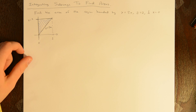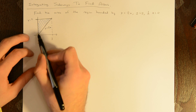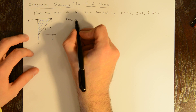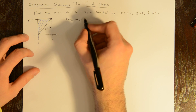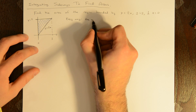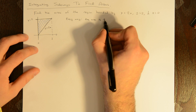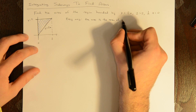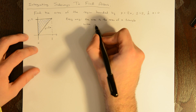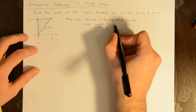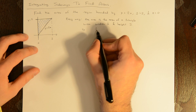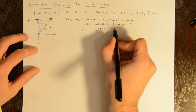The easiest way is just to say this triangle has width 1 and height 2. So the easy way is to say the area is the area of a triangle with width 1 and height 2. The area is one-half base times height, which is just 1.